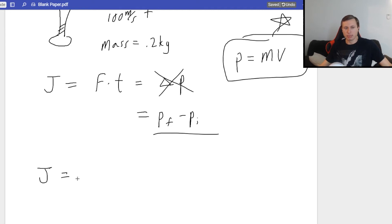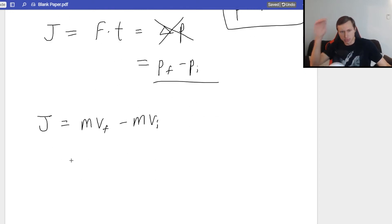So that means J, my impulse, is equal to mass times velocity final minus mass times velocity initial. Now let's plug in these variables. Mass, I said, was 0.2.